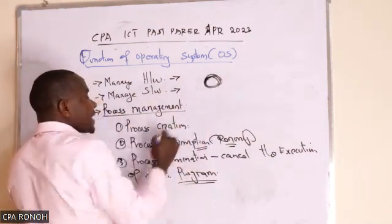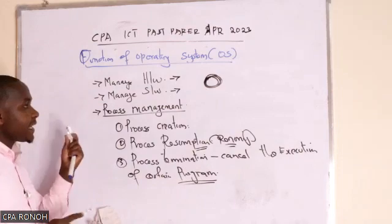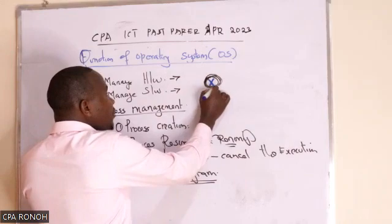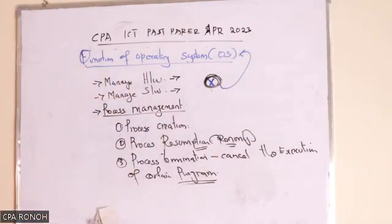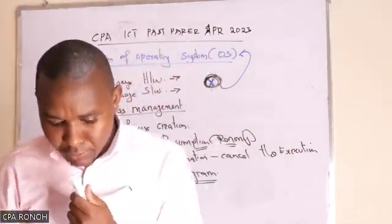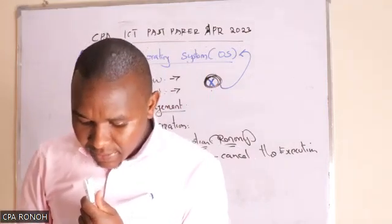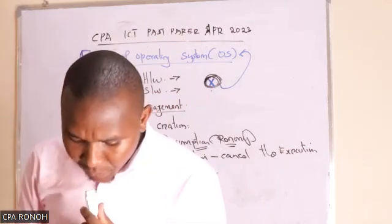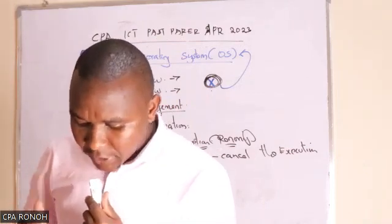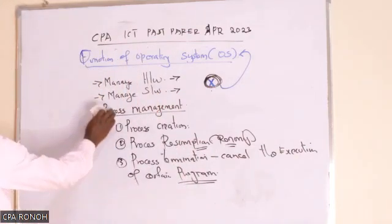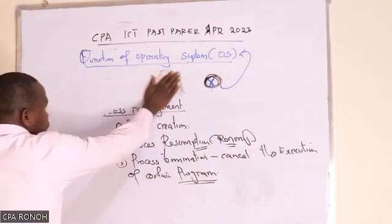The operating system can execute that cancel when you click it. The component that executes this is the operating system. Make sure you understand that. Then we have question D: give three ethical and three social issues.